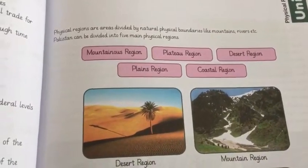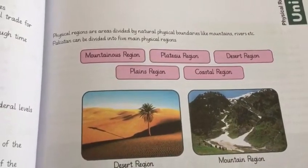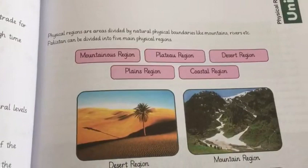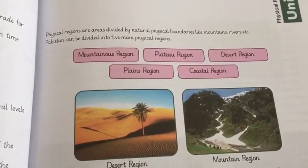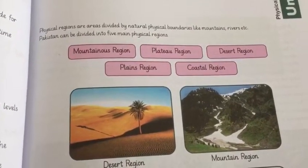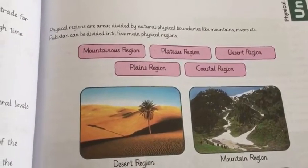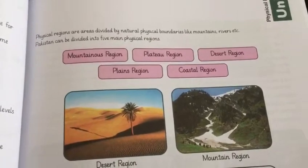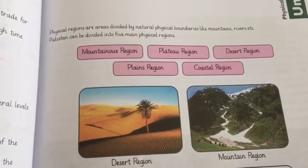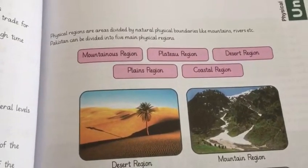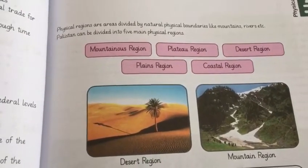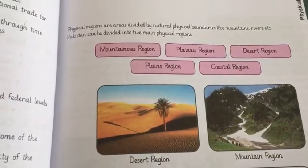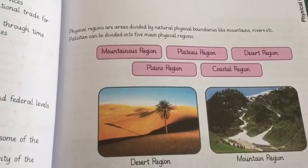Natural boundaries can be deserts, mountains, and rivers. Man-made boundaries could be bridges, fences, walls, etc., that divide one country from another, or one province or region from another.